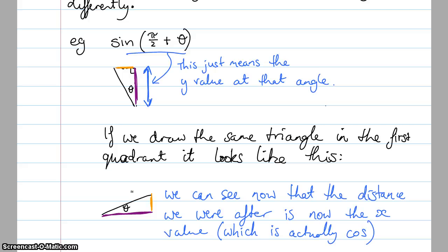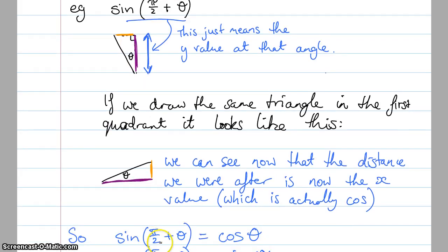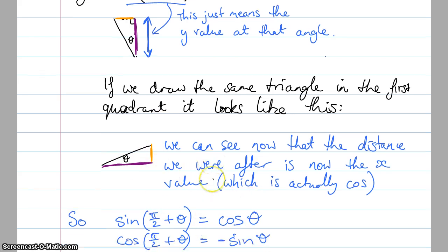It's the same triangle, but as you can see, that's now an x value rather than previously it was a y value. So now we can actually say that sine of π/2 plus theta is actually equal to the same as cos theta because cos is the x value. So it's like the y value and the x value have kind of swapped a little bit. And similarly, we can say cos of π/2 plus theta will be exactly the same, because the x value up here is the same as the y value in the first quadrant, except the only difference is that cos is negative in this quadrant.